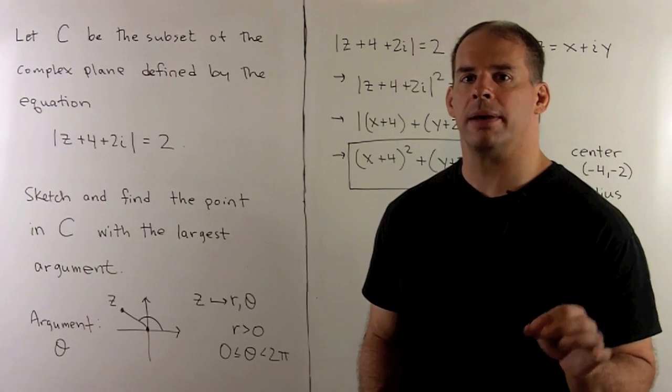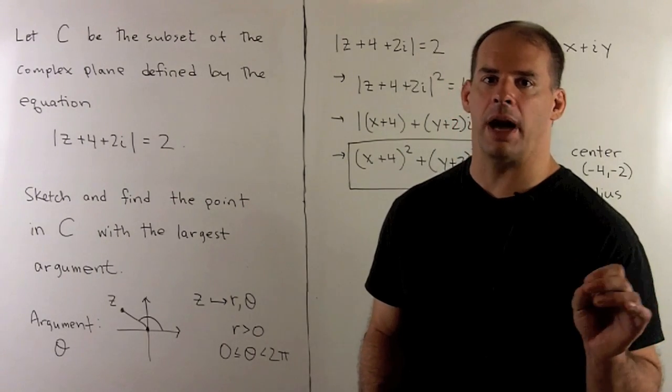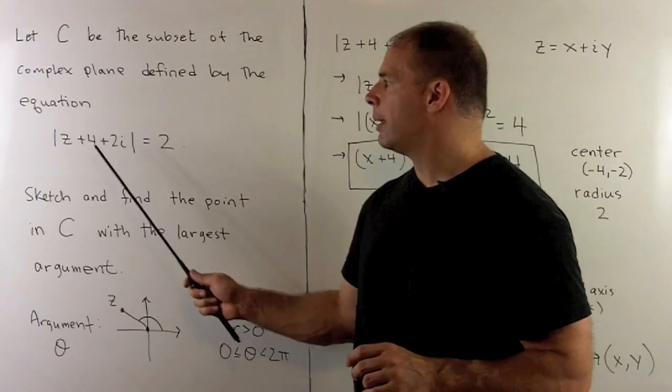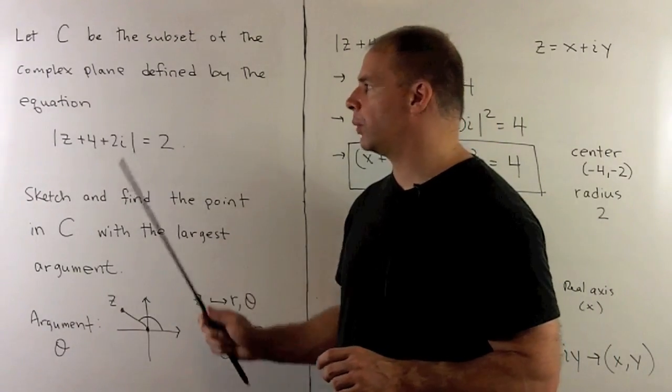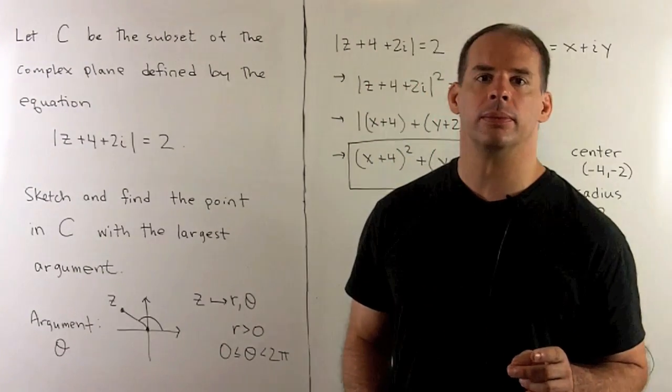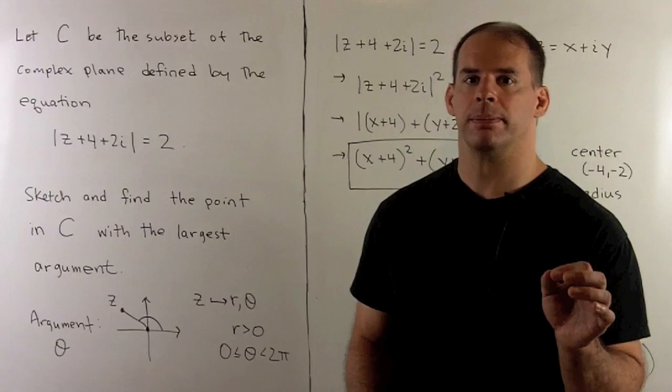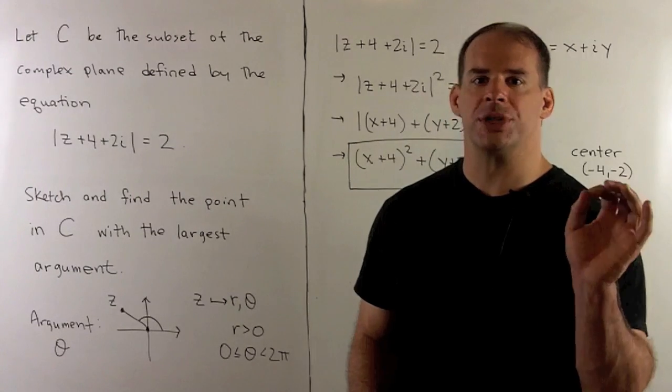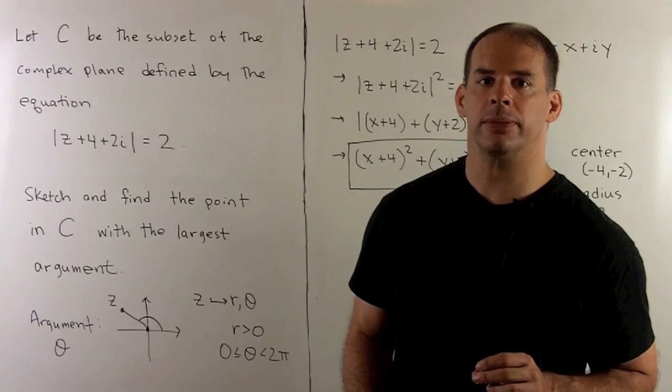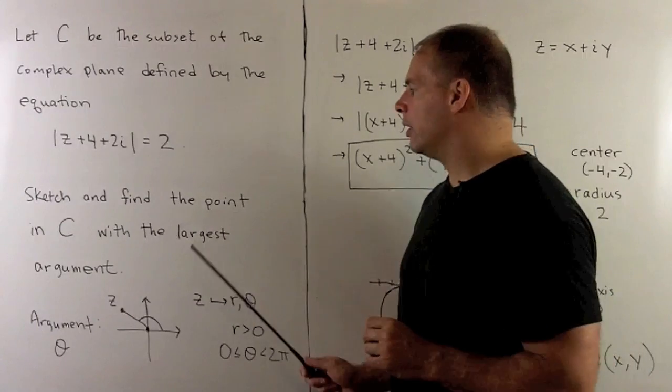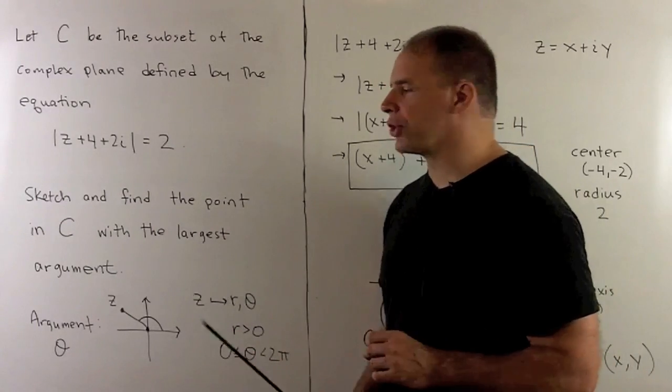Let C be the subset of the complex plane defined by the equation modulus of z plus 4 plus 2i equals 2. First, I want to sketch C in the complex plane. Then, we want to find the point on C with the largest argument.